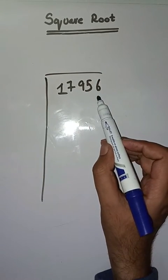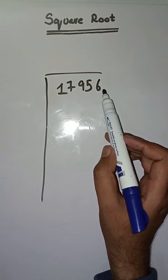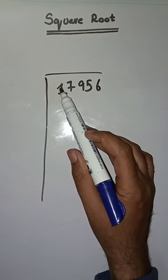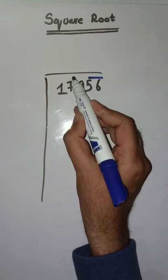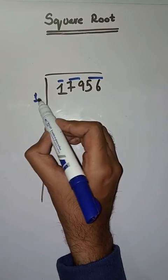We have to find square root of 17956. So first step is we have to make pairs from right to left like this: 56, 79, and 1. First we have to solve one, so we take number one.